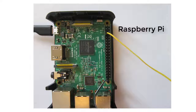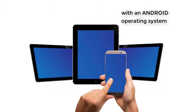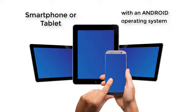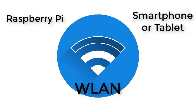Now I'm going to list all the things you need. First of all you need a Raspberry Pi. In this tutorial I'm using a Raspberry Pi 3, but you can use all the models too. Then you need a mobile Android device like a smartphone or tablet. It is really important that both your Raspberry Pi and your mobile device can connect to a wireless LAN.